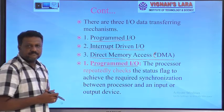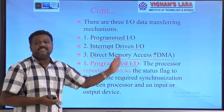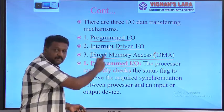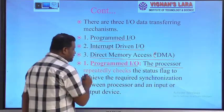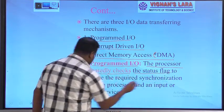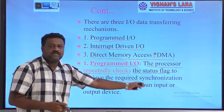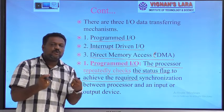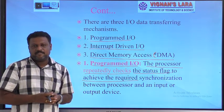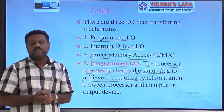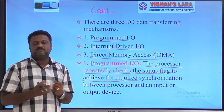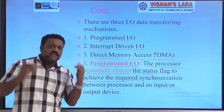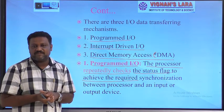The first is Programmed I/O. In Programmed I/O, the processor repeatedly checks the status flag of an I/O device to achieve the required synchronization between the processor and the input or output device. Whenever the CPU wants to communicate with an I/O device, it repeatedly verifies whether the device is ready or busy. For example, by checking the status flag, the CPU identifies that the device is busy completing a previous task.